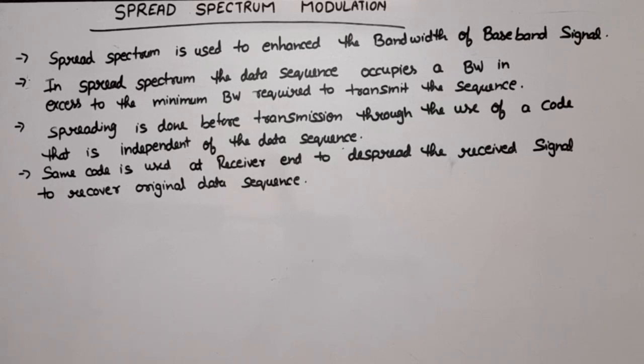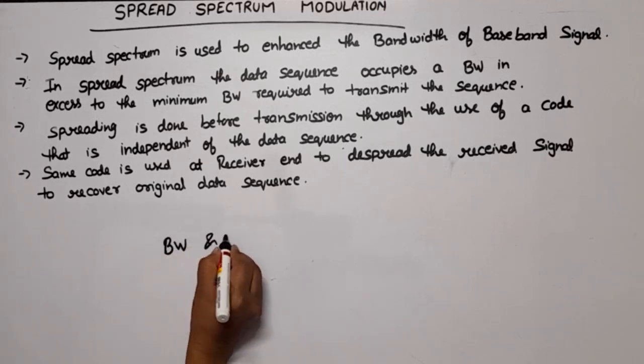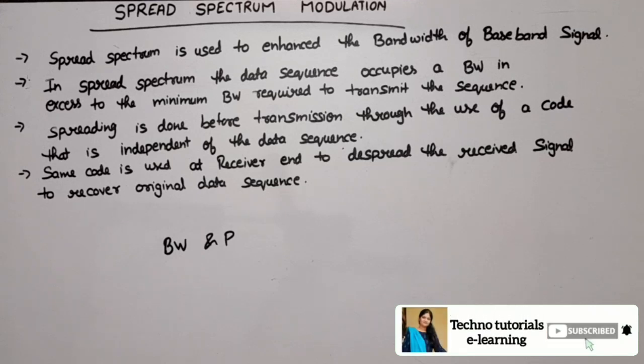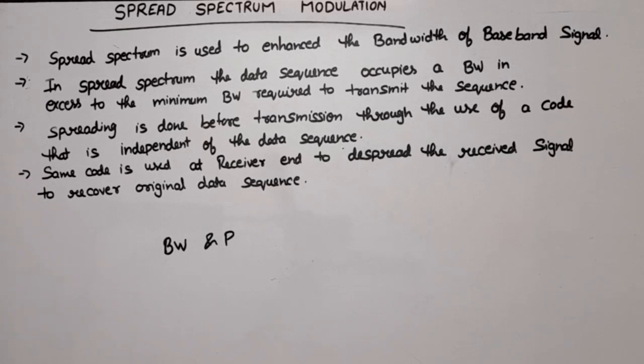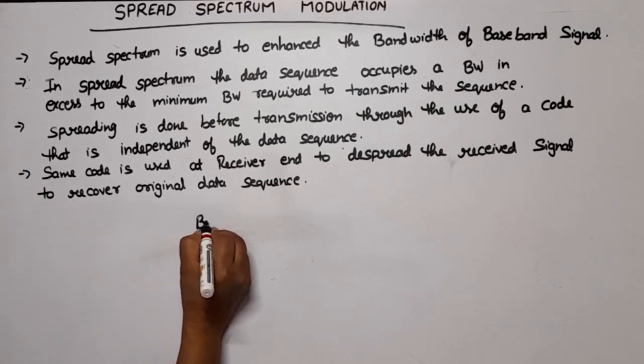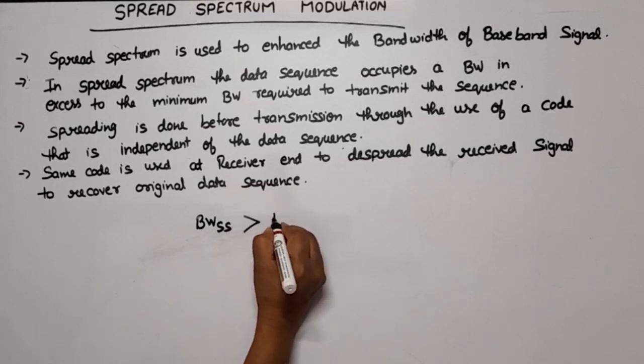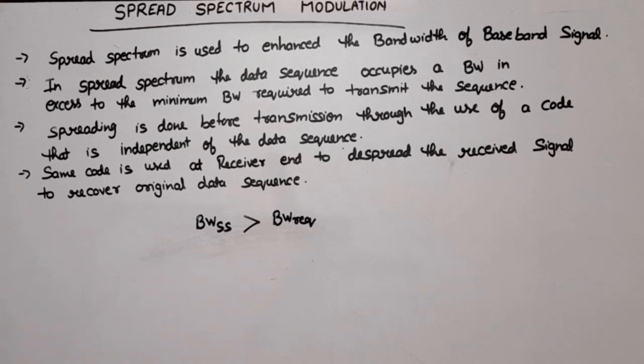Now why this is required. In case of digital communication there are two primary resources: bandwidth and power. But we cannot efficiently utilize these resources. To efficiently utilize them we enhance the bandwidth of the baseband signal. The data sequence occupies a bandwidth in excess to the minimum bandwidth required to transmit the sequence. In this case after spreading, bandwidth after spreading will be greater than the bandwidth which was required. Our bandwidth is increasing.